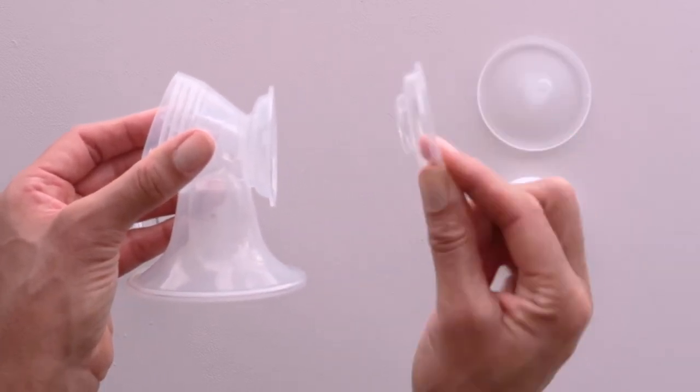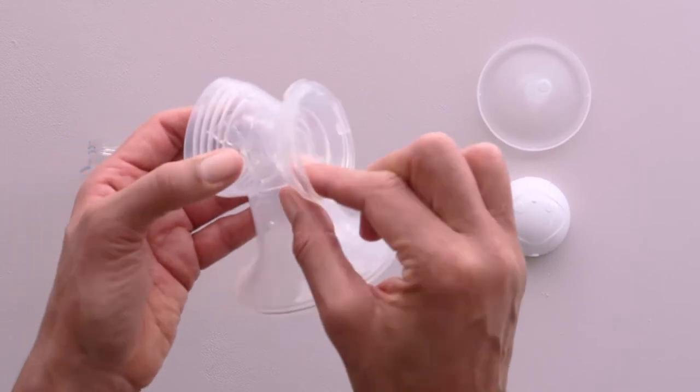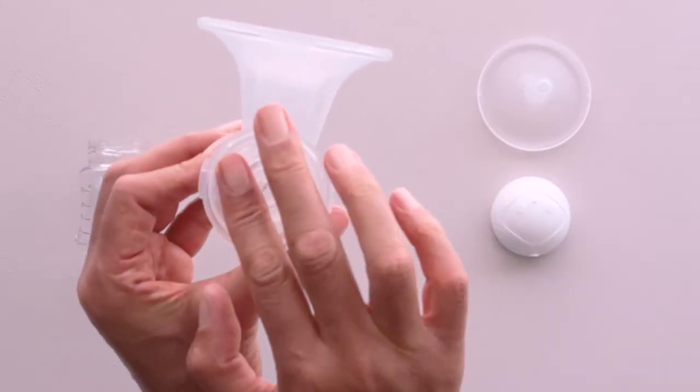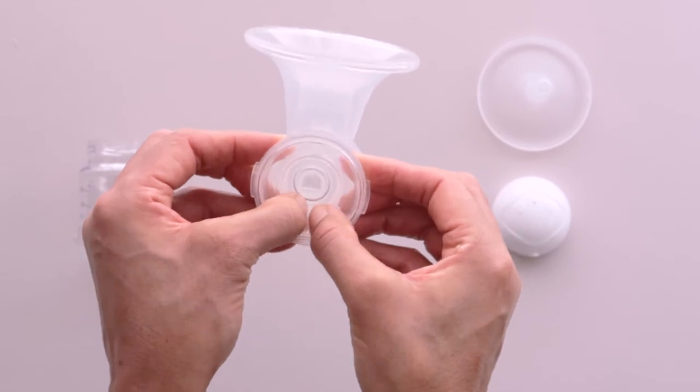This is the diaphragm. Carefully insert the diaphragm into the top of the breast shield body. Ensure the edge is flush and the seal is good.